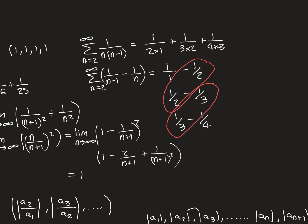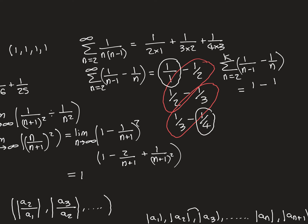Writing this out: the partial sum from n equals 2 to k of (1/(n-1) - 1/n) equals 1 minus 1/k, since all the middle terms cancel in the telescoping. Taking the limit as k approaches infinity, the sum equals 1. So the series of 1/(n(n-1)) sums to exactly 1.